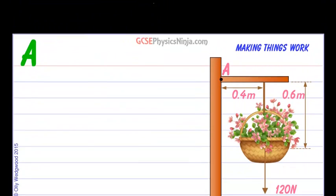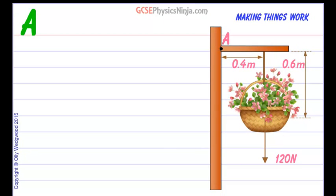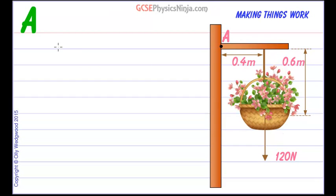So let's set this calculation up. First of all let's do a list of data. We know that the force that's creating this turning effect about A is 120 newtons. And we know that the perpendicular distance, that's the distance which is at 90 degrees to the line of action of the force, is 0.4 meters. So D equals 0.4 meters.